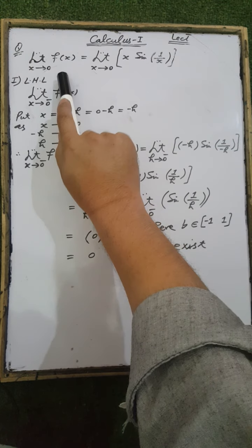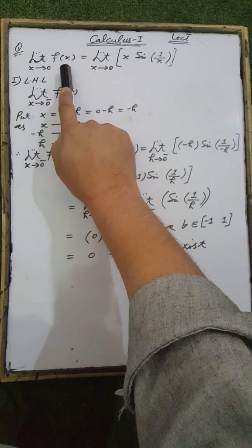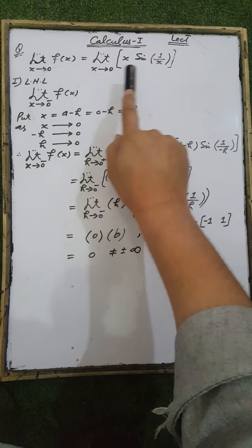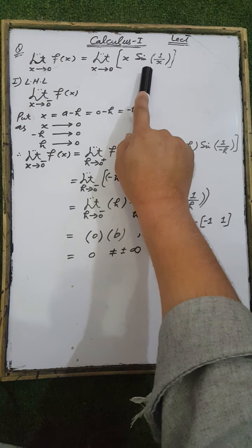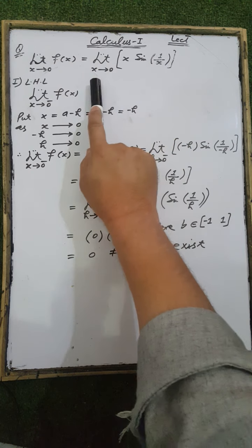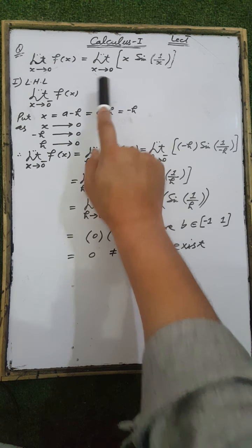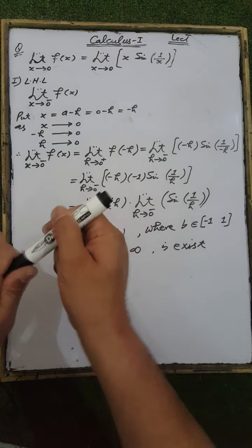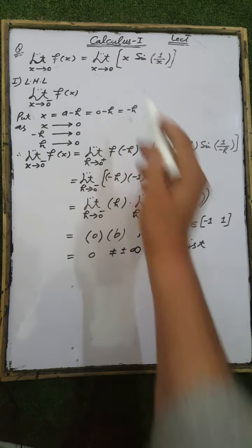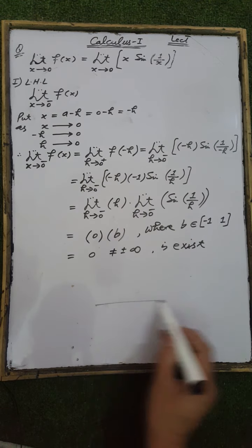Calculate the limit of the function f(x) = x·sin(1/x) when x tends to 0. To bound the function f(x) to the left-hand side of the neighborhood of a point a = 0.